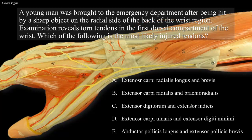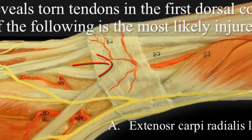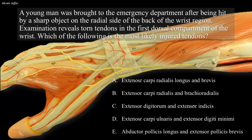Answering this question requires knowledge about the extensor retinaculum. The extensor retinaculum is a thickening of the deep fascia of the forearm that lies obliquely across the extensor surface of the wrist joint. Proximally, it is attached to the radius proximal to the styloid process. Distally, it is attached to the pisiform and triquetral bones.